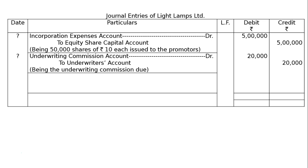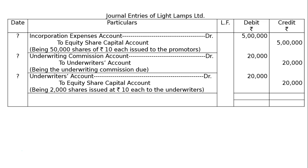When issuing shares to the underwriters: Underwriters Account is debited ₹20,000 to Equity Share Capital Account ₹20,000, being 2,000 shares issued at ₹10 each to the underwriters. Then it is to be totaled — debit and credit both columns will be equal, that is ₹5,40,000 in both columns. And this is the final answer.